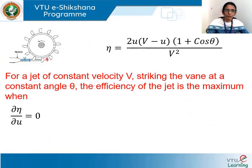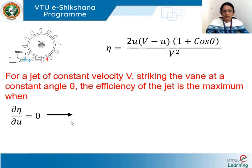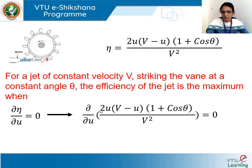The efficiency η is a function of u, v, and θ. For a given vane and jet (v and θ constant), efficiency varies with the tangential velocity u. To find the u that maximizes efficiency, we take ∂η/∂u = 0, which gives: ∂/∂u [2u(v−u)(1+cosθ)/v²] = 0.